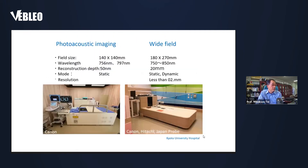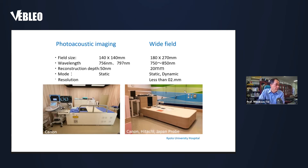These are the machines we developed over five years. The right-hand side is what we call the wide field machine. It shows the field size, wavelengths, reconstruction depth, mode, and resolution. The right-hand side machine allows dynamic, real-time analysis. The resolution is around 200 micrometers.